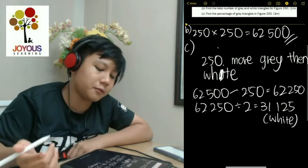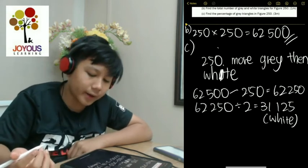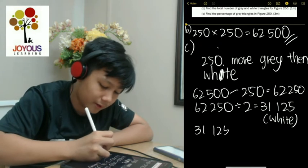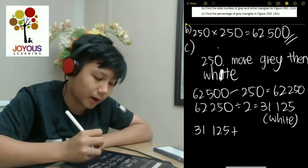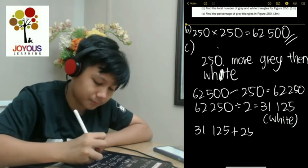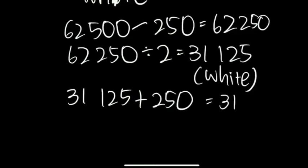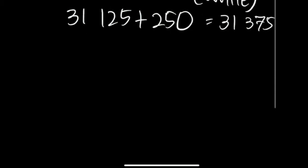And since there are 250 more gray than white, to find gray, you just need to take 31,125 plus 250, which is equal to 31,375. That is the number of gray.